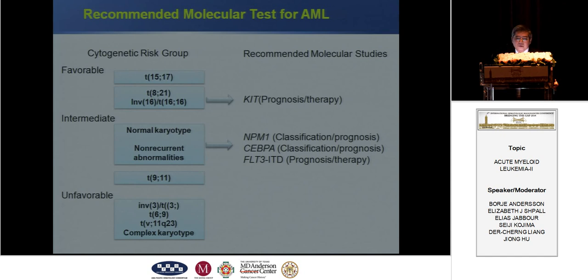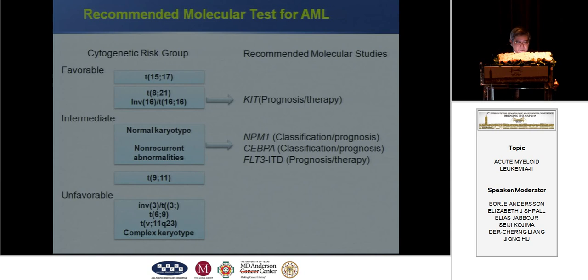The recommended molecular tests for AML divide into three cytogenetic risk groups. The favorable group includes t(15;17), t(8;21), and inv(16); KIT mutation testing is recommended for the latter two. The intermediate group includes normal karyotype and non-random abnormalities, requiring NPM1, CEBPA-alpha, and FLT3-ITD testing — though in pediatric AML, these mutations are less prognostically useful than in adults. t(9;11) is controversial, with some groups classifying it as favorable. Unfavorable includes inv(3), t(6;9), 11q23 with other variants, and complex karyotype.